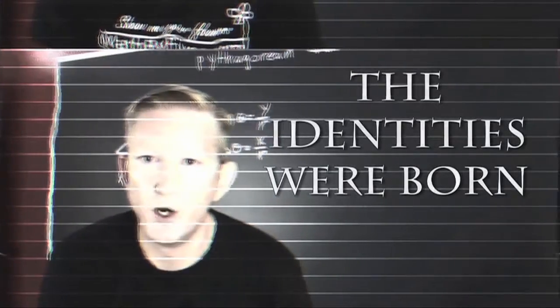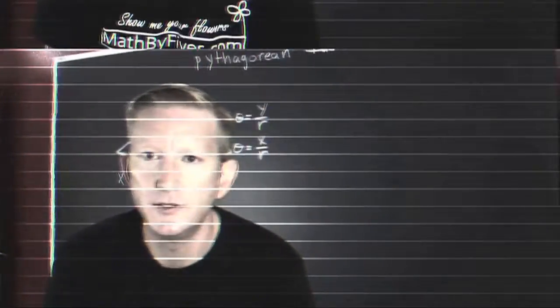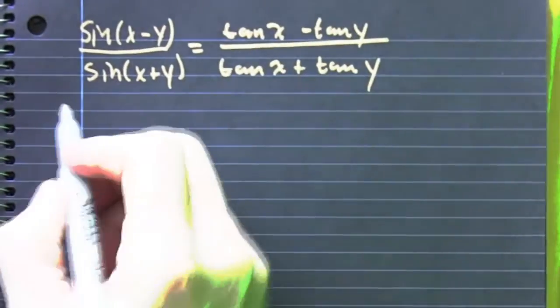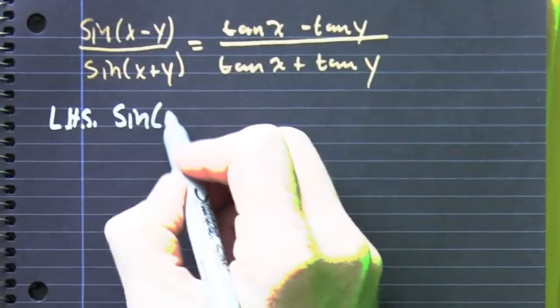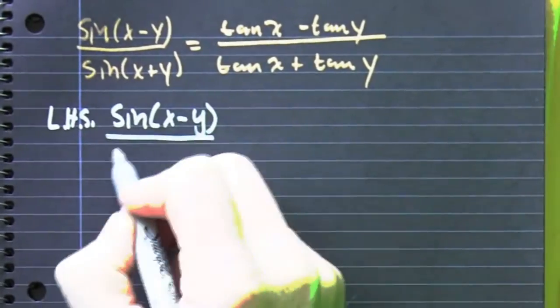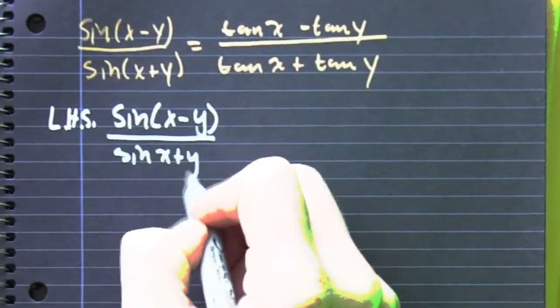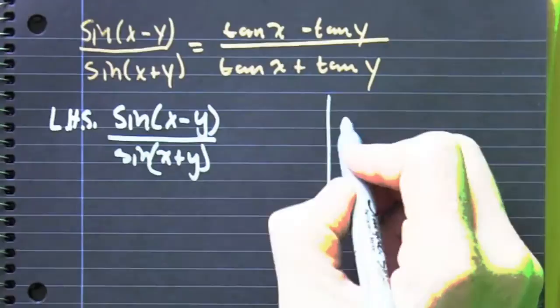And this is where the identities were born. So we're trying to prove the sine of x minus y divided by the sine of x plus sine of y. That's going to be tangent x minus tangent y divided by tangent x plus tangent y.